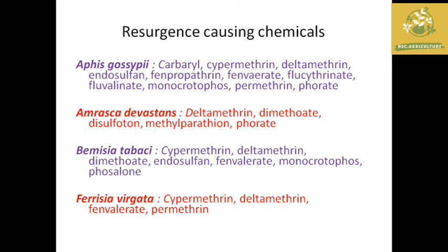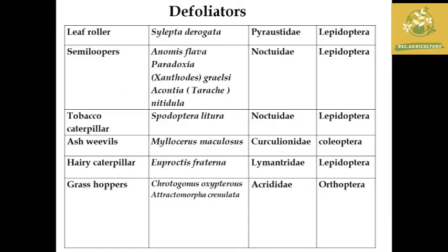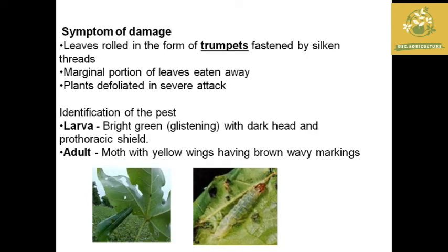Next are Defoliators in cotton. The first is the Leaf Roller, with its scientific name, family, and order. The major symptom of damage is leaves rolled into a trumpet form.